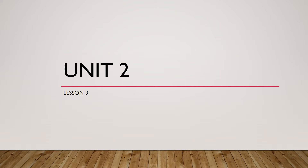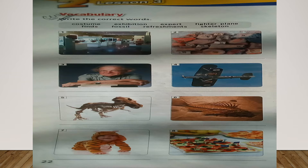Hello again. Today we are going to study lesson 3 in unit 2 vocabulary. Can you see these eight pictures? Now you are going to write the correct word under each picture: costume, exhibition, expert, fighter plane, finds, fossil, refreshments, skeleton.